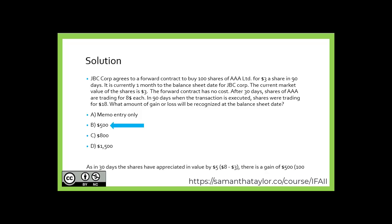If you said B, $500, you would be correct. That's because shares have appreciated in value by $5 — the difference between the forward contract price of $3 per share and $8 per share on the balance sheet date after 30 days. Eight minus three is five, times the 100 shares equals $500. Thank you, and I'll see you in the next chapter.